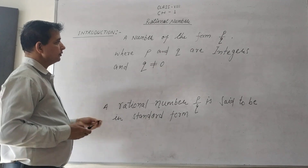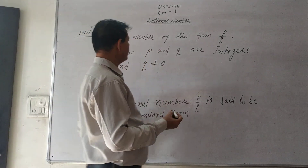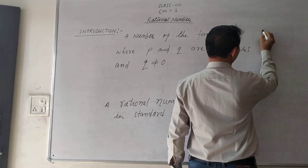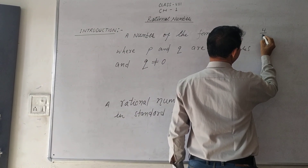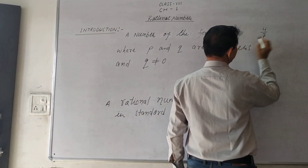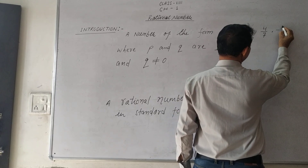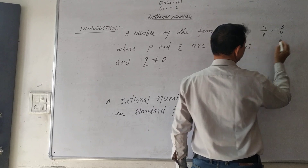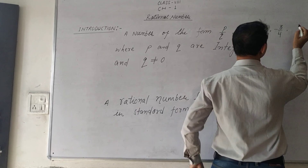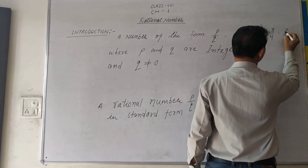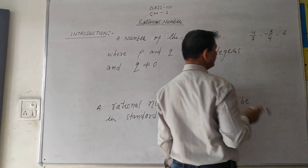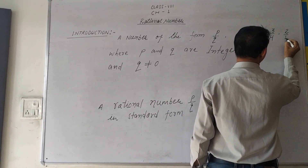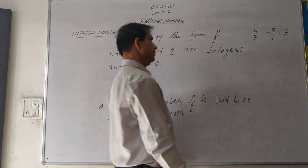The p upon q form means, for example, 4 upon 7 is a positive rational number. Minus 3 upon 4 is a negative rational number. And 2 as a whole number is also a rational number, because we can write it as 2 upon 1.